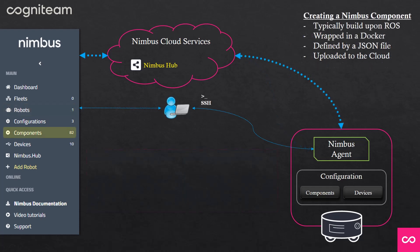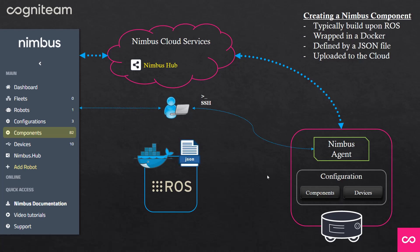So how do you create a Nimbus component? Typically you will start with ROS, the robotic operating system — it's not a must — but you can download some ROS packages and define the things that you need. Then you wrap it up with a Docker file and a Docker image, and then you define a JSON file, and the user can upload this whole thing to the Nimbus cloud. One of the great advantages of using Nimbus is that when deploying a configuration, you don't really care if you're using ROS version 1, ROS version 2, or not using ROS at all — it's already dealt with by using Docker.